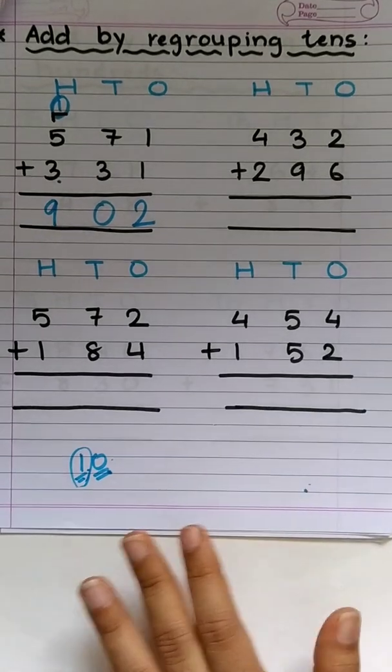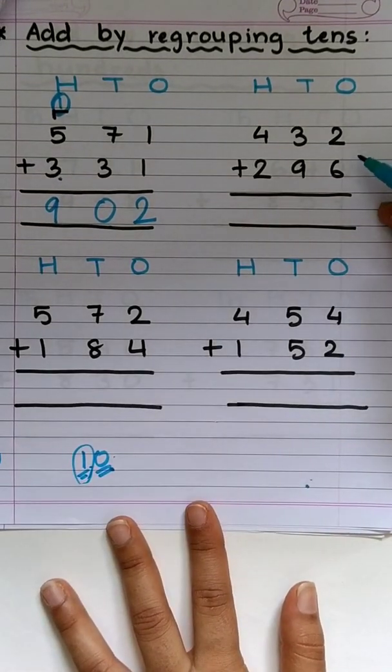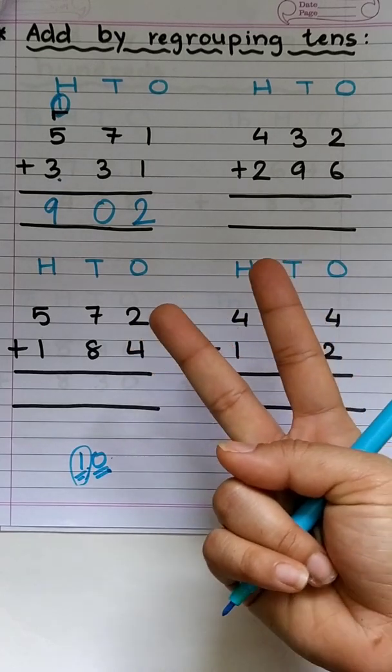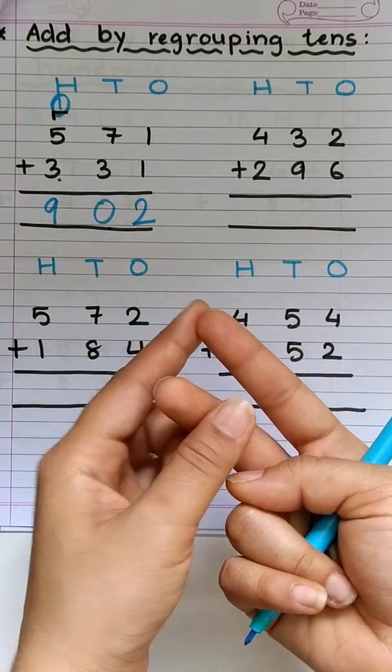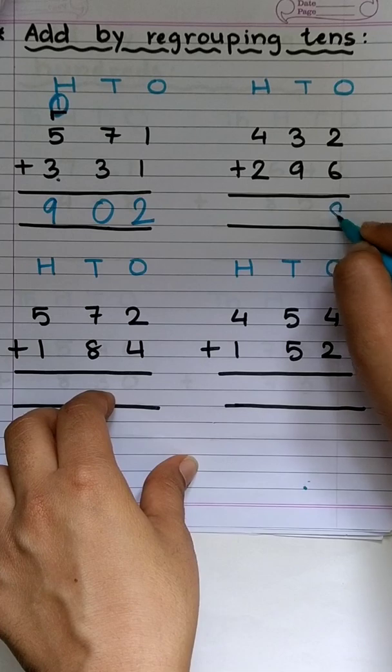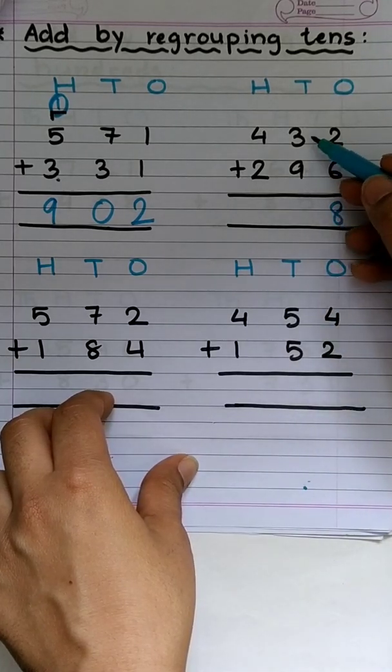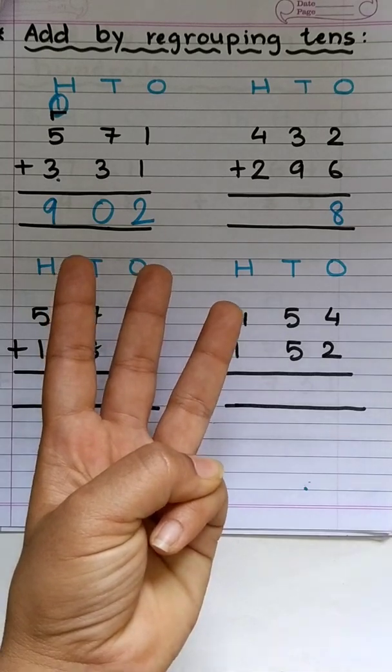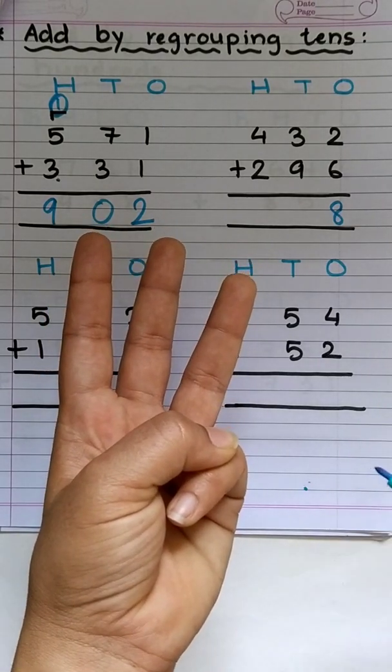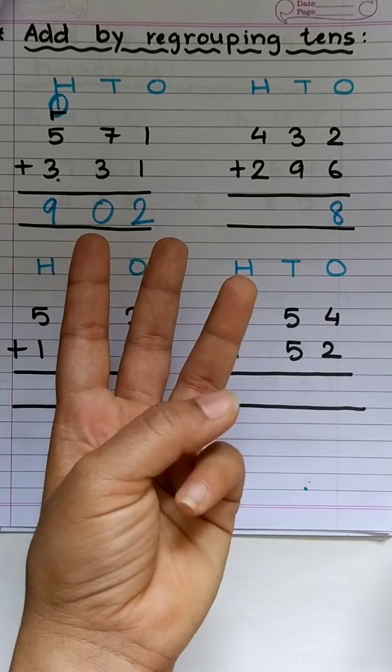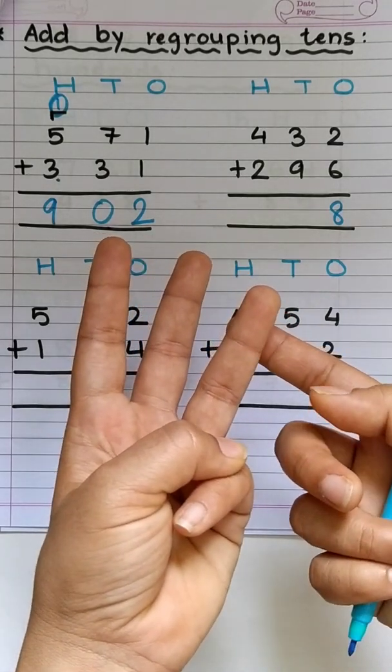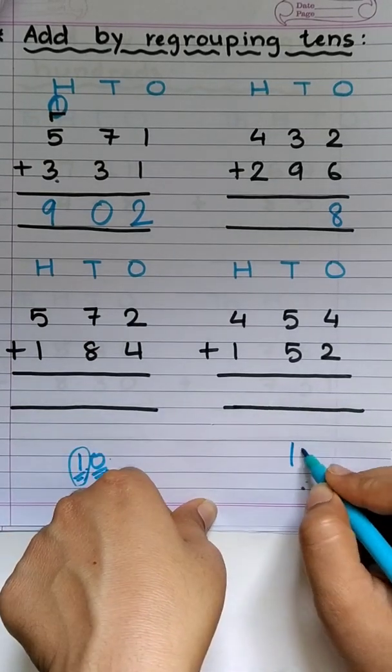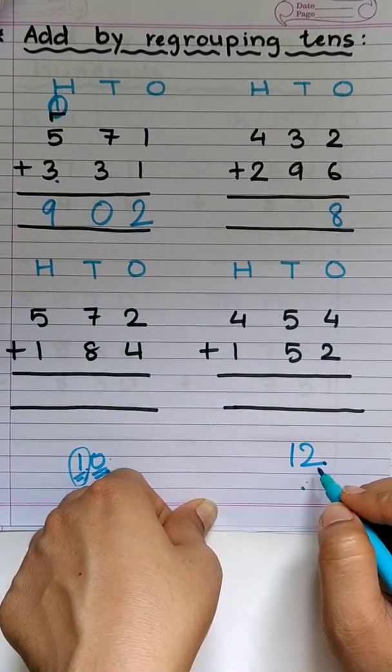Let's try one more. So, 2 plus 6, bigger number on mind, smaller on finger. Now after 6, 7, 8. 9 plus 3, 9 in the mind, 3 on finger. Always keep bigger number on mind. It makes the calculation easy. Okay? So, after 9, 10, 11, 12. The answer is 12, which is a 2 digit answer.